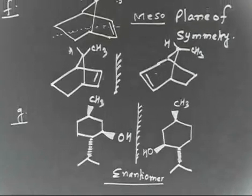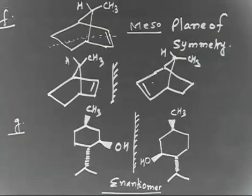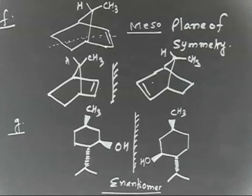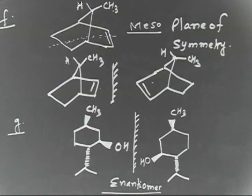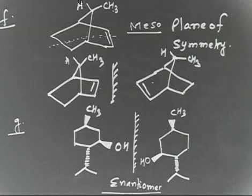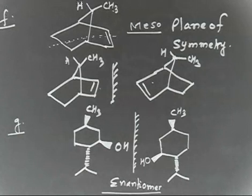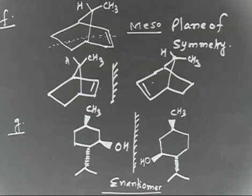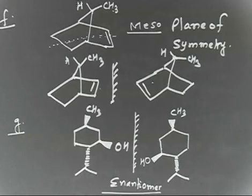In summary, there are methods to identify meso compounds. First, draw the mirror image and try to rotate — if you can superimpose, the compound is meso. Second, look for a plane of symmetry or a point of symmetry — if found, the compound is meso. Either trick works: draw the mirror image and try to superimpose, or look for the plane or point of symmetry.